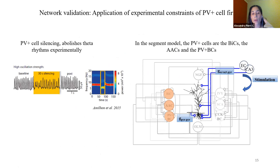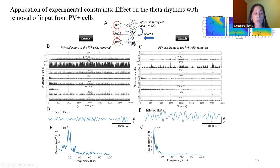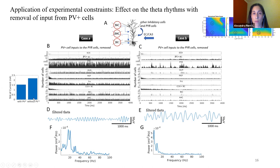Experimentally, we know that if we remove the PV-positive cells, we lose the theta rhythms. We did the same test in our models, and found that in the Case A network, removing the PV cells abolished theta rhythms, but not in the Case B network. This tells us that the contribution of the inhibitory cells is important and more biophysically realistic. We found that removing the PV cells increased the standard deviation of the mean input current, meaning it became a lot more irregular and dysregulated the theta rhythm.